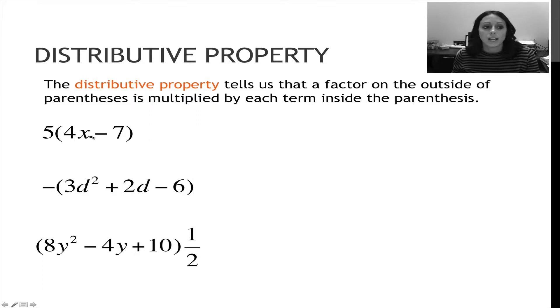Now first notice, 4x and 7 minus 7 cannot be combined. If they could be combined, I would go ahead and do parentheses first in the order of operations and then multiply them by 5. Because that's not the case, I am going to distribute this 5 so that I can get rid of these parentheses.